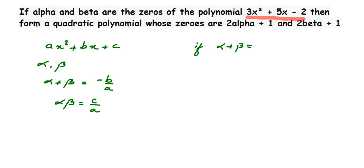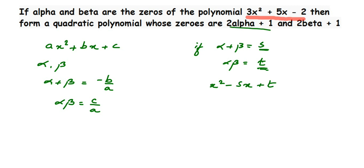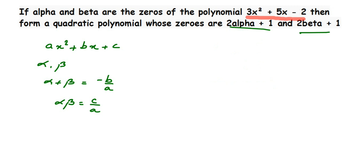Now if we know the sum of the zeros — say alpha plus beta equals S — and alpha into beta equals T, then we can rewrite the polynomial as x squared minus Sx plus T. So here we need to find the sum and product of the zeros. But first, let us find alpha plus beta and alpha into beta using the polynomial 3x squared plus 5x minus 2.